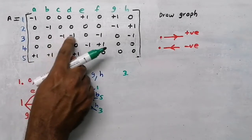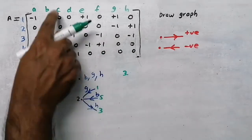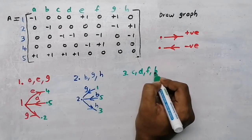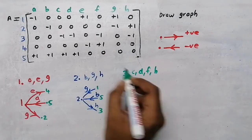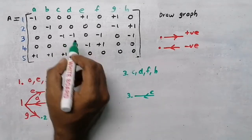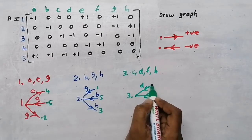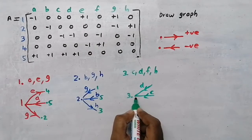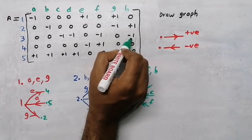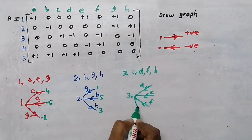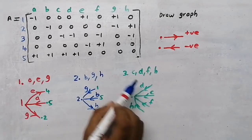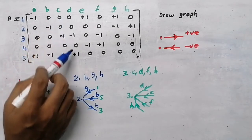Now I am going to take node 3. Which branches are there? There are four branches: c, d, f, and h. Branch c is negative - negative means branch is coming to us. Branch d is also negative, so branch is coming to us. Branch f is also negative - everything is negative, so branch is coming to us. Branch h is also negative, so branch is coming to us.